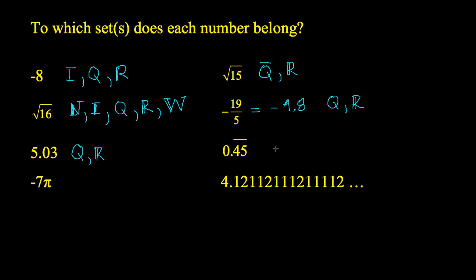0.45 with the bar on top means the 4-5 repeats. Once again, that's Q and R, the rationals and the reals.